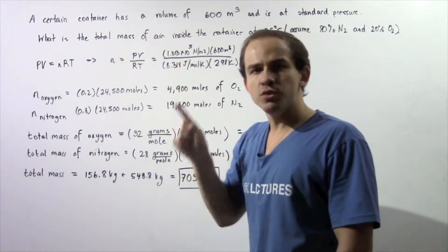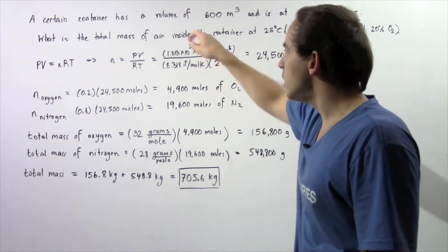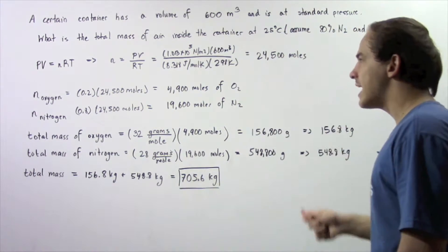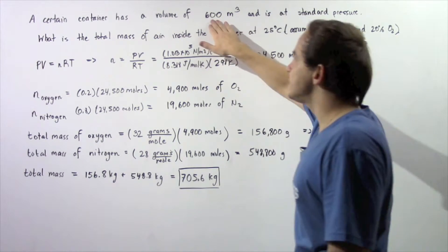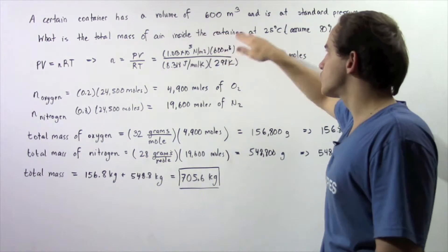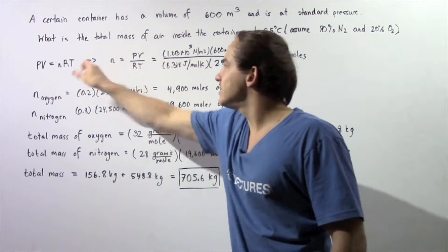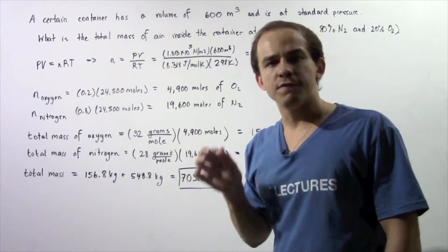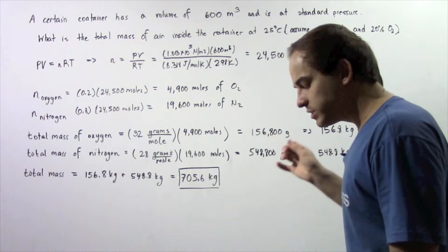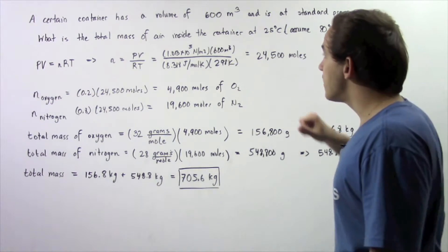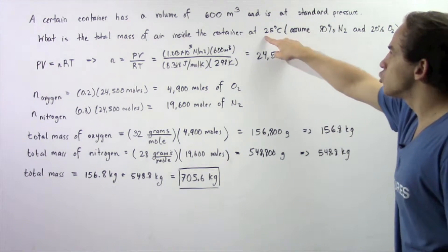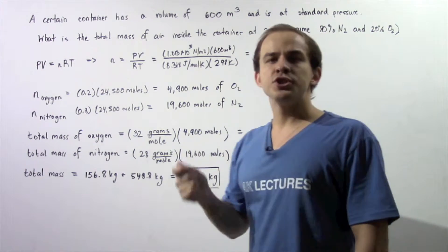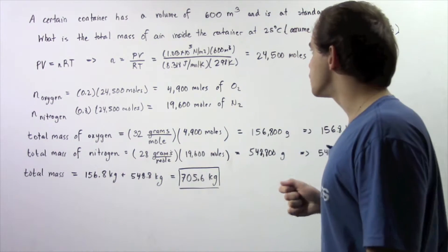The pressure given in newtons per meter squared is 1.013 times 10 to the 5. The volume is given to be 600 meters cubed. The constant R is 8.314 joules per mole times Kelvin, and the temperature in Kelvin is 25 plus 273, which is 298 Kelvins.